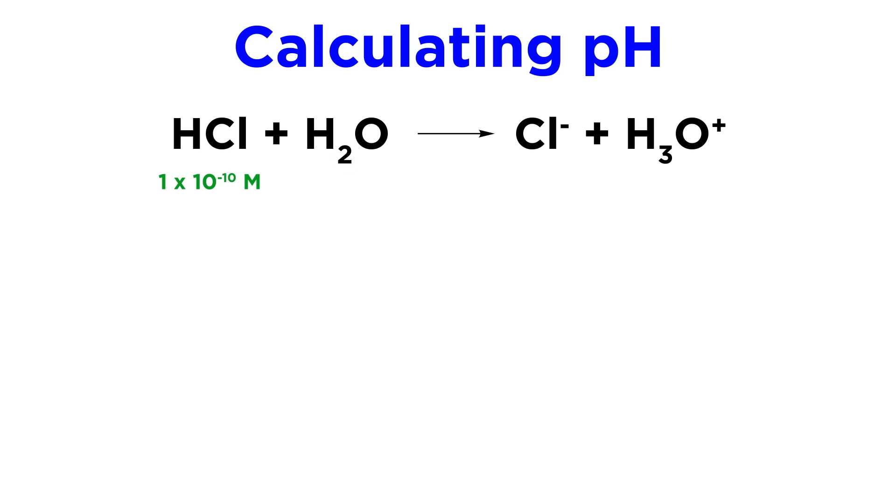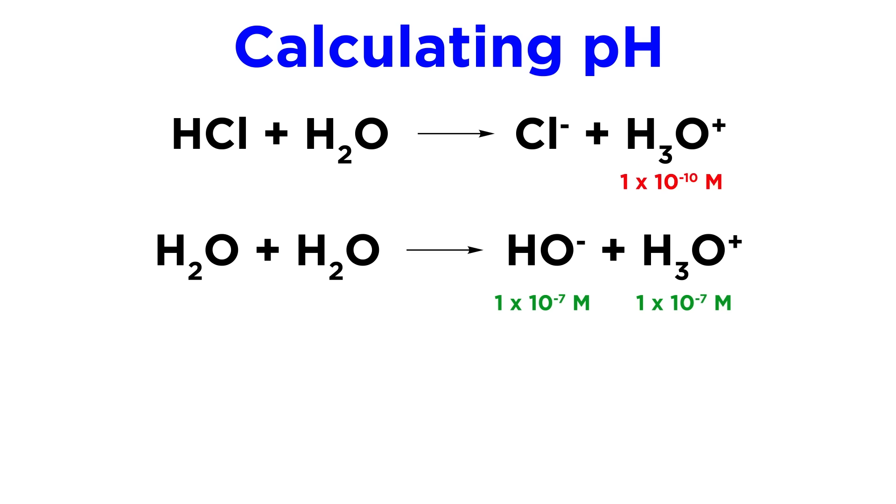What if we consider an HCl solution where the concentration is 1 times 10 to the negative 10 molar? In this case, we actually do not have to do any math, because the acid is so dilute that it is insignificant. In this case, the auto-ionization of water is more relevant than this acid-base reaction, since the hydronium and hydroxide ion concentrations in pure water are both 10 to the negative 7 molar. This additional hydronium is therefore negligible, and we can just consider this as essentially pure water with a pH of 7.